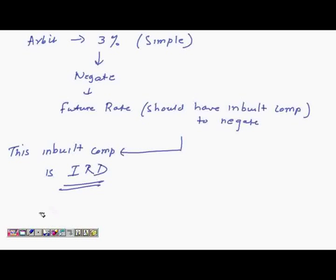So if this interest rate differential is added to your spot, you will get a future rate. So spot plus IRD will be equal to your future rate. Exactly. This is the whole theory behind your interest rate differential. And this is how futures are priced.